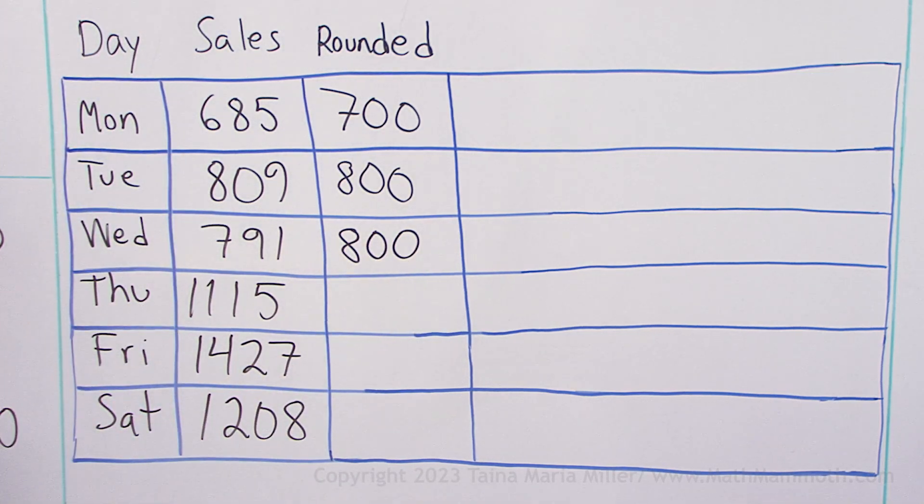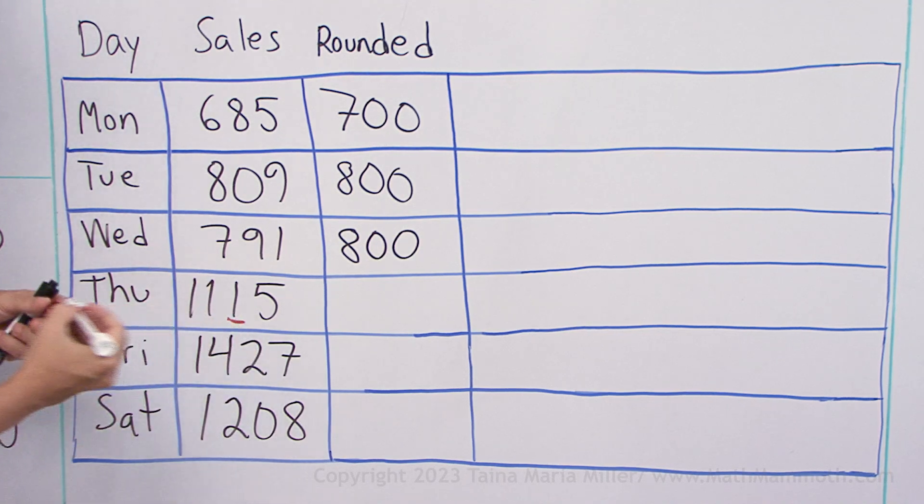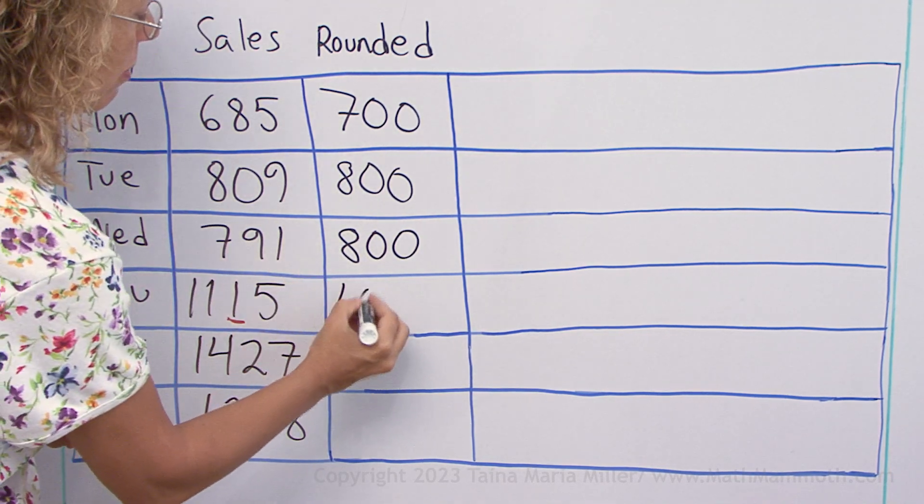And here, 1115. Okay, this is your tens digit. It's rounded down just to 1100.